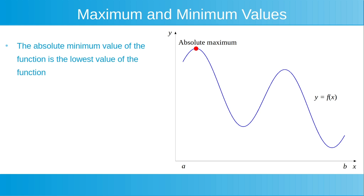The absolute minimum value of the function is the lowest value of the function over its domain. That value is shown here, highlighted in red.